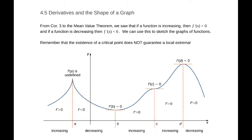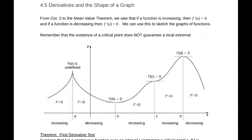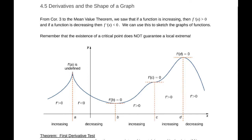One thing we have to remember is that if the derivative is 0, that does not mean we have local extrema — not necessarily. Here is a generic graph. At the different critical points, we have a critical point at a where the derivative is undefined; in that case it is a maximum point. The function is increasing and then decreasing, so that tells us there is a change in direction, which means there was a maximum or minimum.